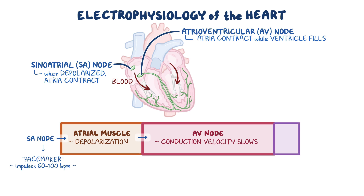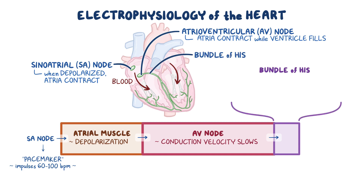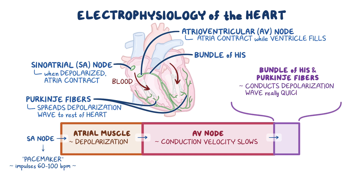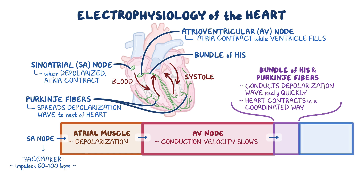From the AV node, the depolarization wave travels through the conducting system of the ventricles — first into the bundle of HIS, then into the left and right bundle branches, and into the Purkinje fibers. The Purkinje fibers are the final bit of conductive tissue that spreads the depolarization wave to the rest of the heart. The HIS-Purkinje system conducts the depolarization wave very quickly, making the heart contract in a coordinated way. This makes up the systole, where blood is ejected into the pulmonary and systemic circulations. Finally, the ventricles repolarize to prepare for the next cycle, allowing them to relax and fill with blood, called diastole.